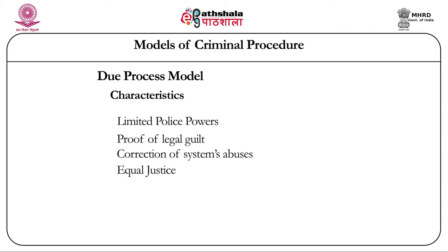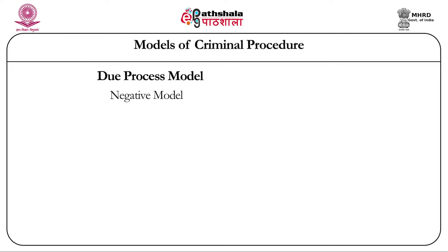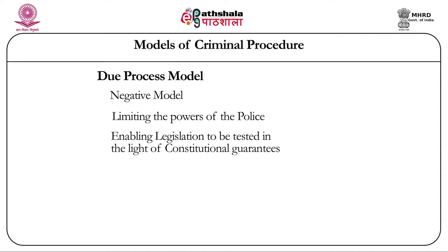The last characteristic of the Due Process Model is that it is a negative model. Unlike the Crime Control Model, which emphasizes the presence of official power for effective working of the criminal justice process, the Due Process Model believes in limiting the powers of the police. For this model, it is not enough to have enabling legislation for an official act to be valid — it has to be tested against the mandates of the supra-legislative law, that is the constitution, and judicial scrutiny of administrative action vis-à-vis the constitution becomes mandatory.